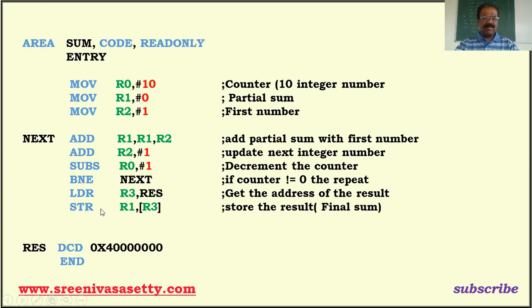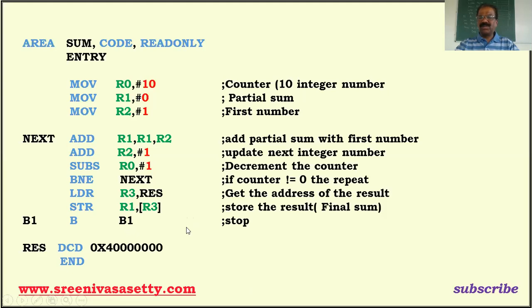STR transfers a 32-bit number — if it is 16-bit you use STRH, and for a byte you use STRB. STR stores the content of R1 to a memory location; the square bracket refers to memory. The memory location address is given by R3. So the result goes to the memory location whose address is in R3. Once done, the program is terminated using an infinite loop — this prevents executing further instructions.